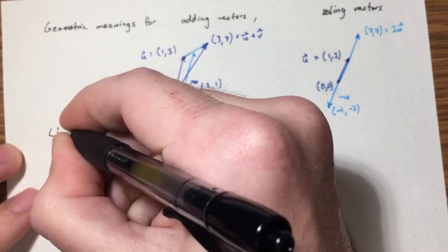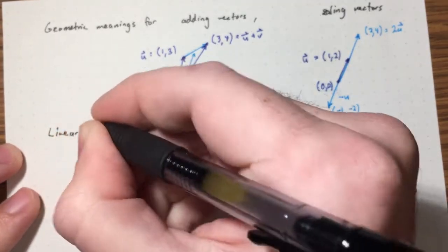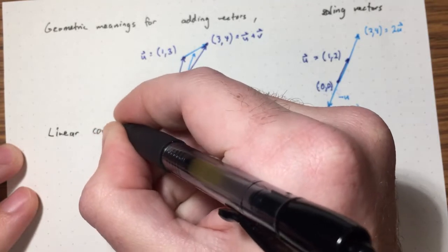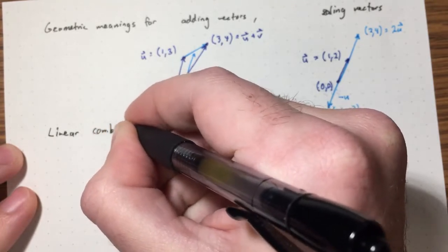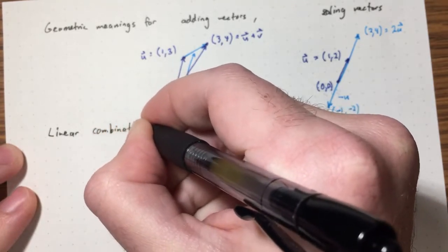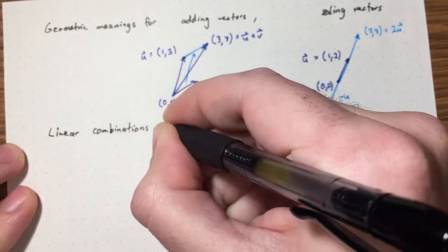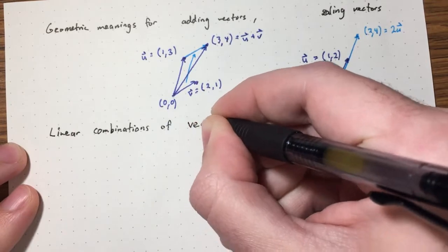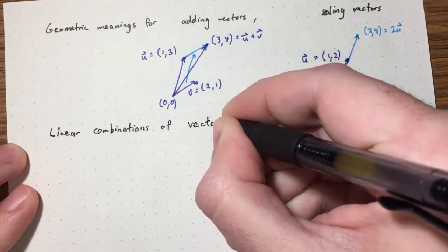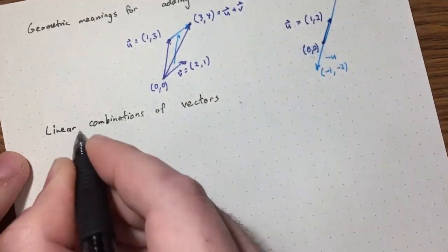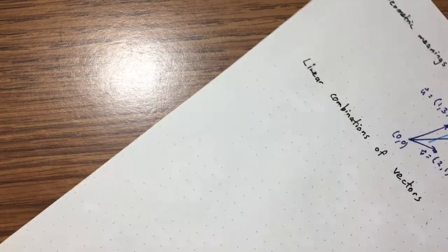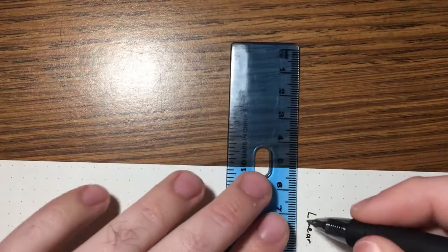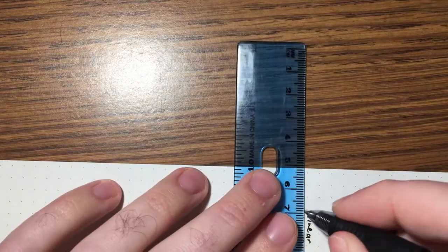Now let's talk about linear combinations of vectors. This is an extremely important concept.